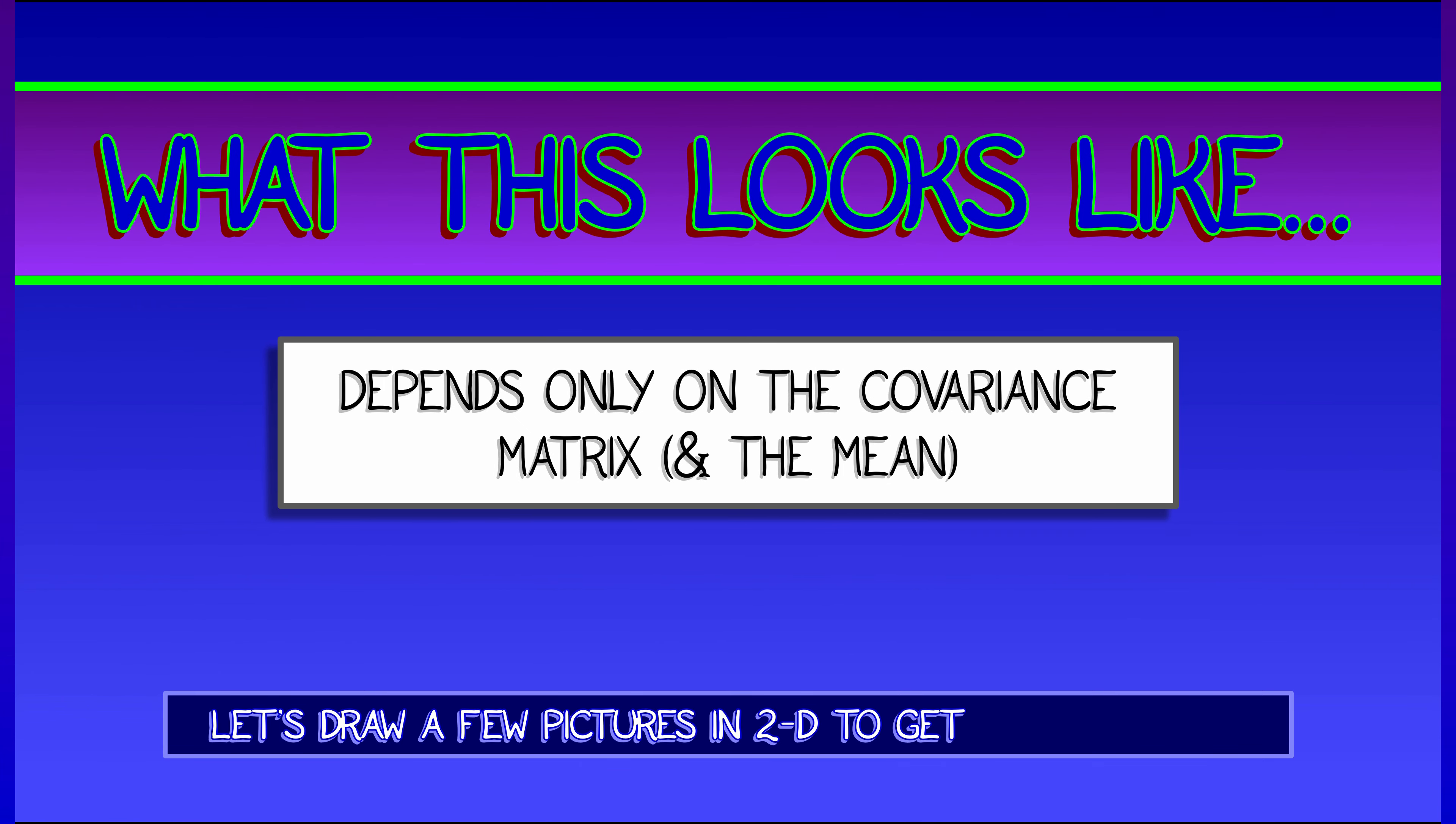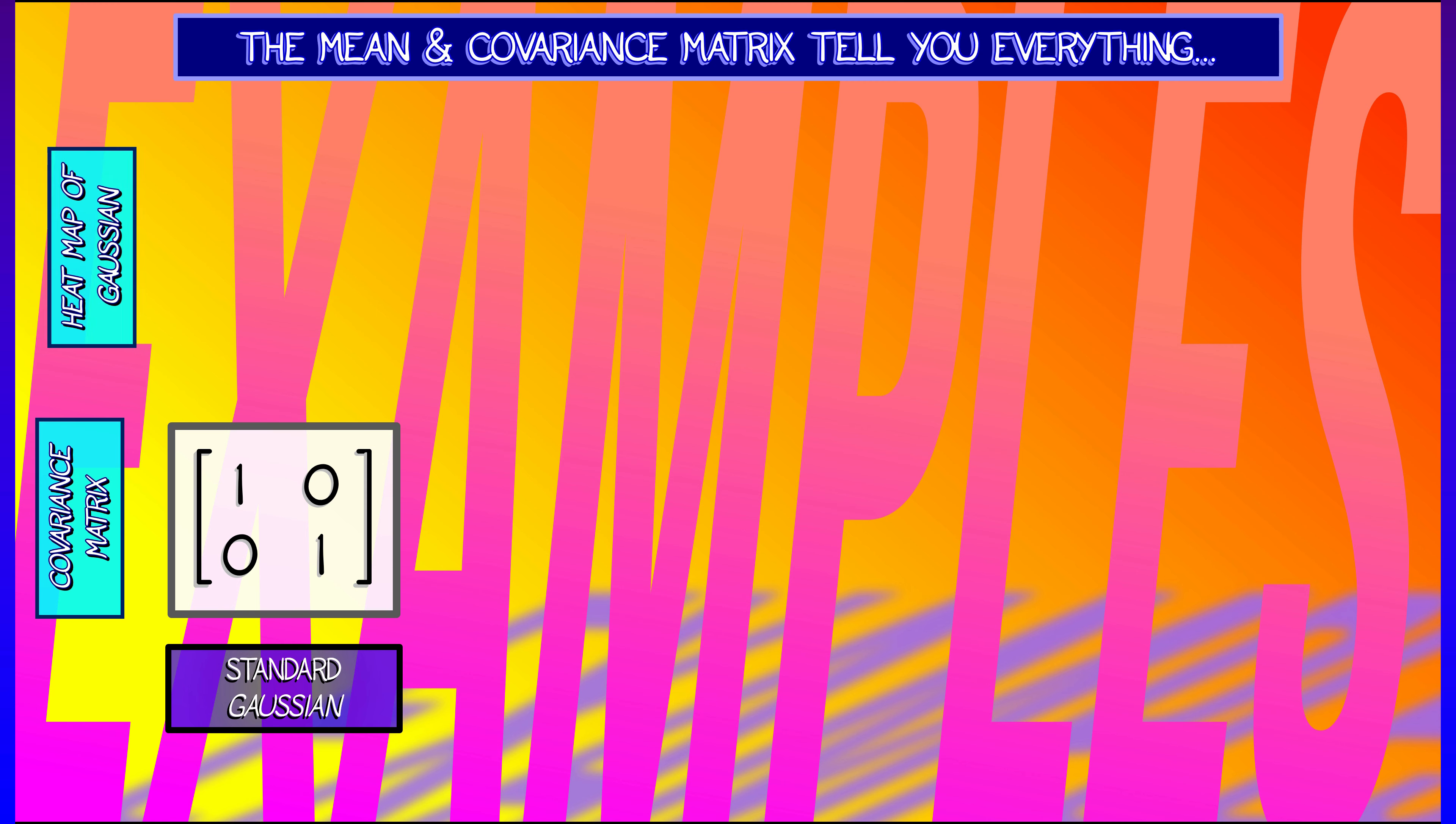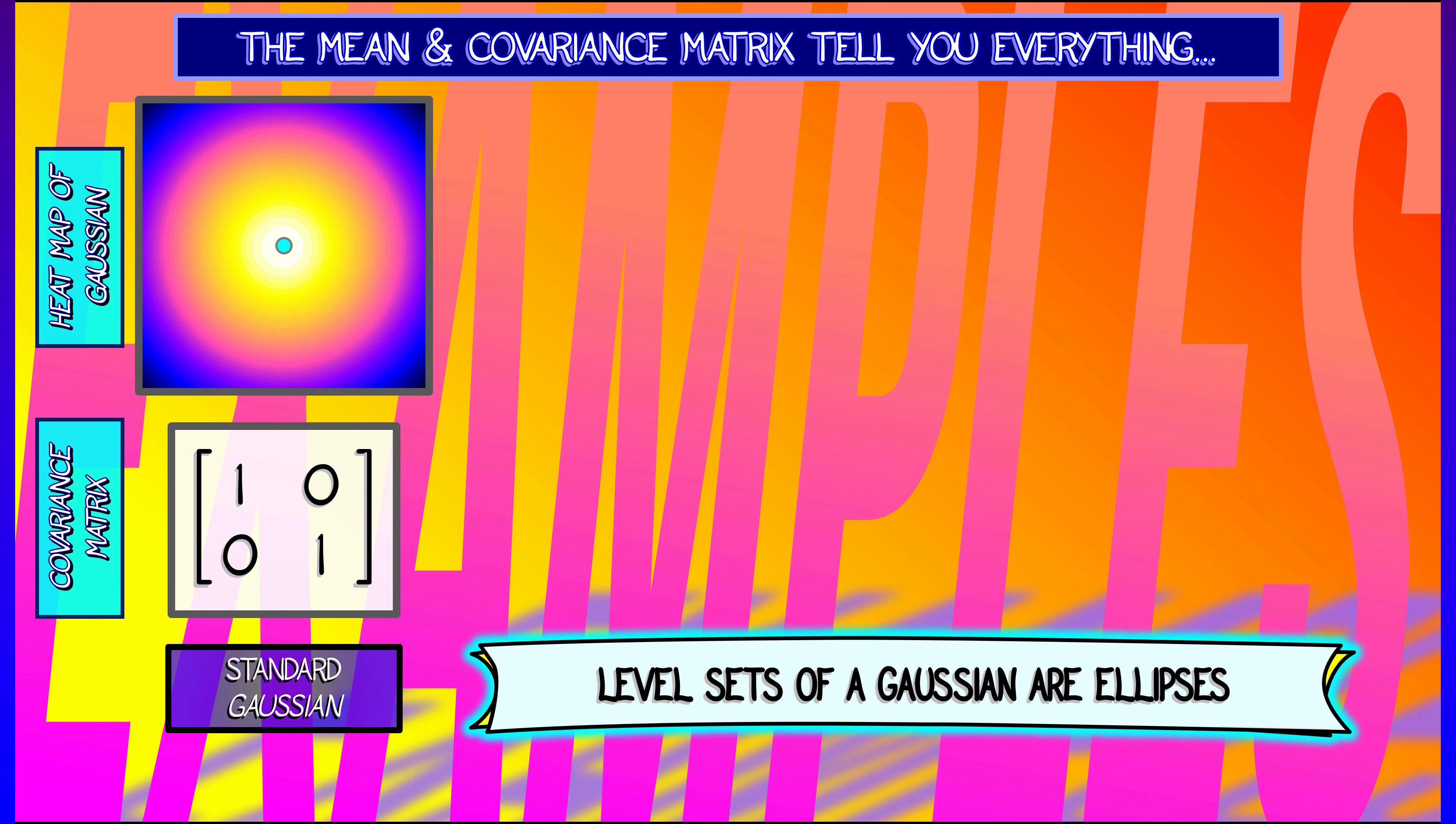Let's say we look at some pictures in the plane. Let's say we have a standard Gaussian with covariance the identity matrix, [[1, 0], [0, 1]]. Well, if I were to look at level sets of this, this would be circles about the mean. In general, one of the things that's really nice is that level sets of a Gaussian are ellipses.